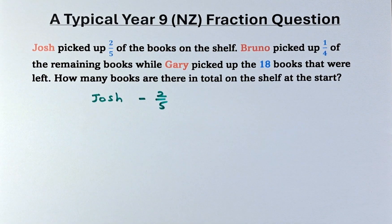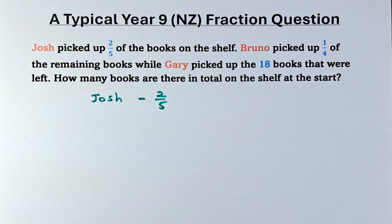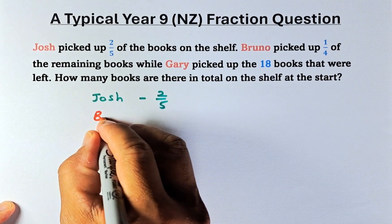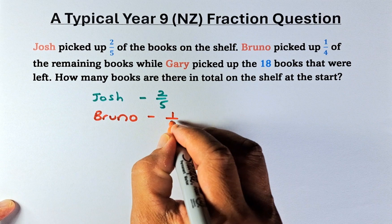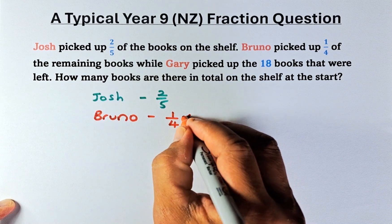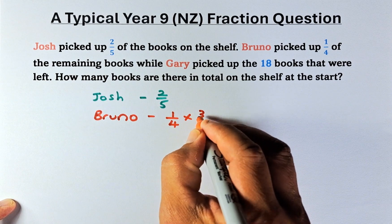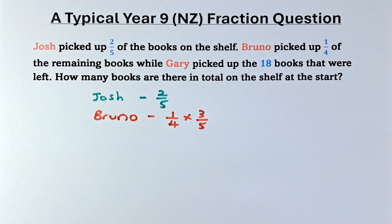So now the next person is Bruno. Bruno is going to be picking up one-quarter of the remaining books. So if Josh picked up two-fifths, the remaining is three-fifths. So Bruno is picking up one-quarter of the remaining, which is three-fifths. So one-quarter multiplied by three-fifths.